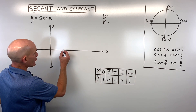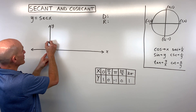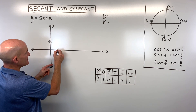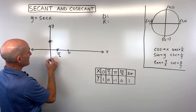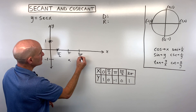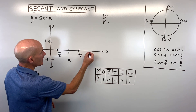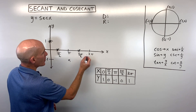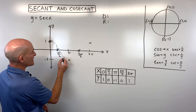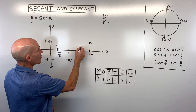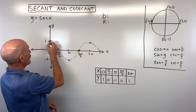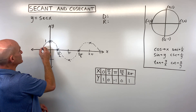Let's graph that. At 0 we're at 1; at π/2 we're at 0; at π we're down at −1; at 3π/2 we're back to 0; and at 2π we are at 1. I'm drawing this as a dashed line — you're already familiar with this cosine graph, but it keeps going, so you can repeat this pattern.